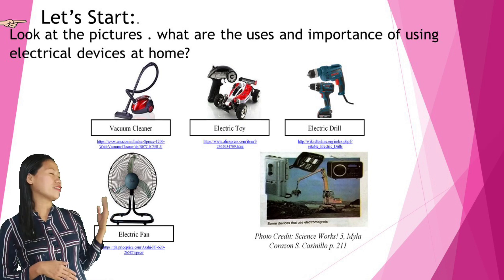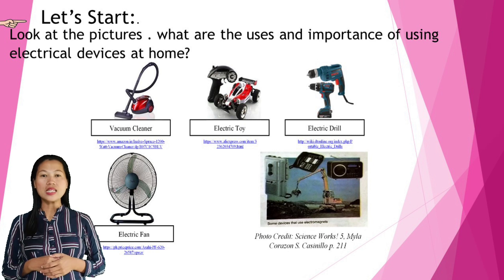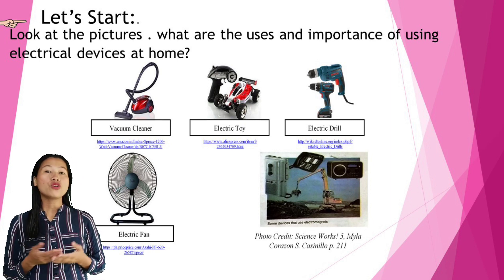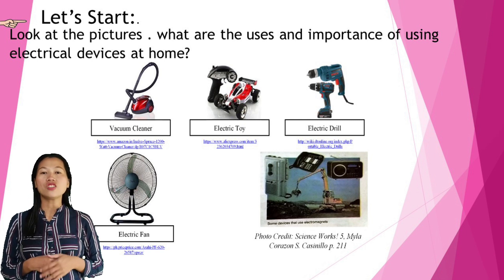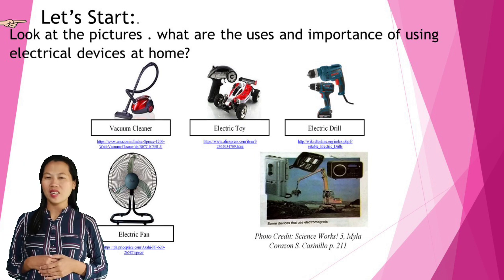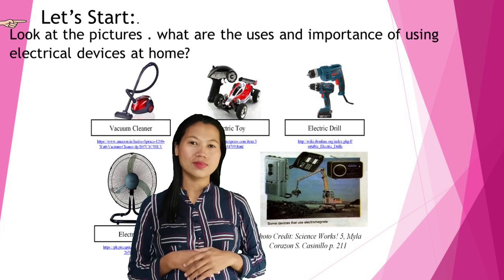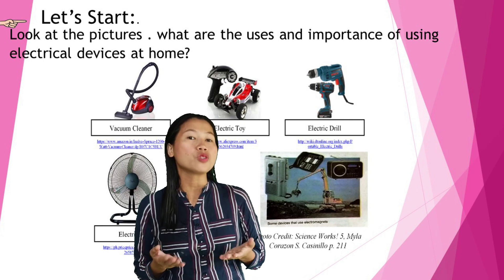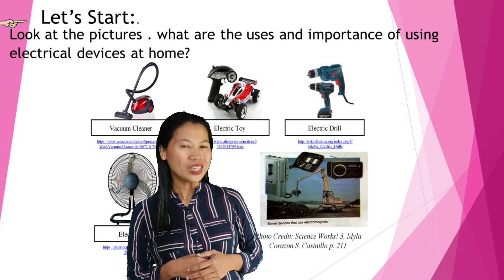Electric fan — fans are used for circulating air in rooms and buildings, for cooling motors and transmission, and for cooling and drying people, materials or products. Telephone — an instrument designed for the simultaneous transmission and reception of human voice; a personal type of communication.